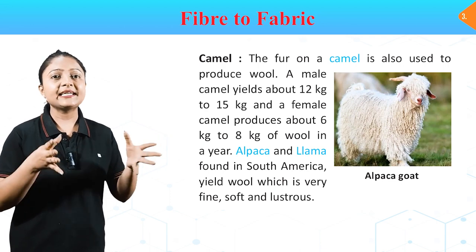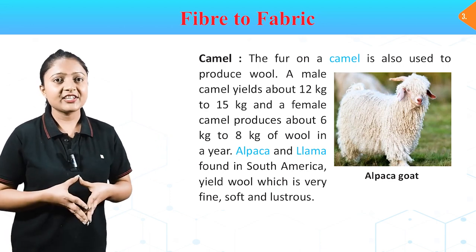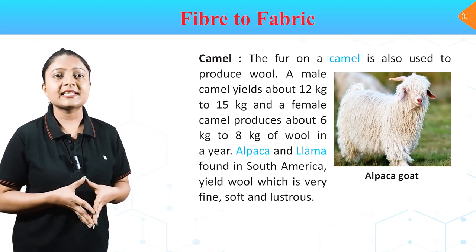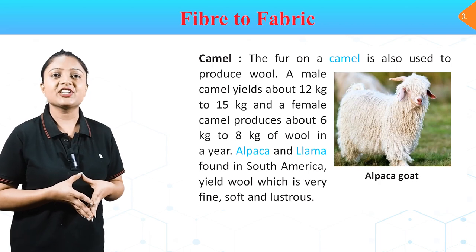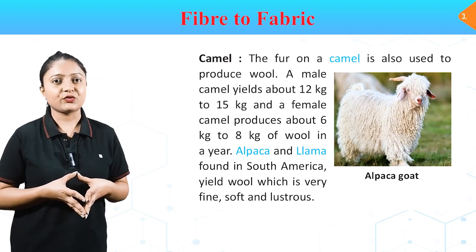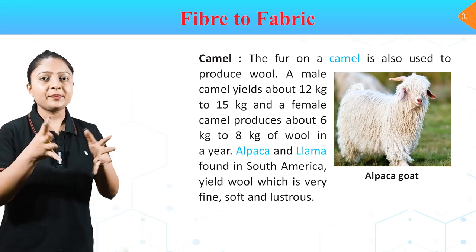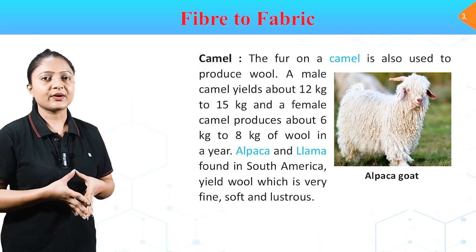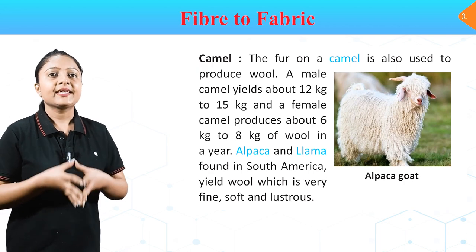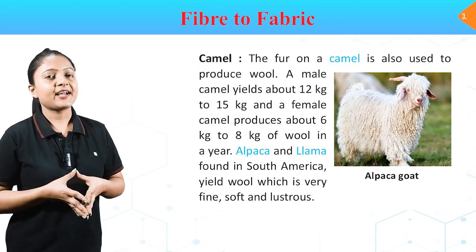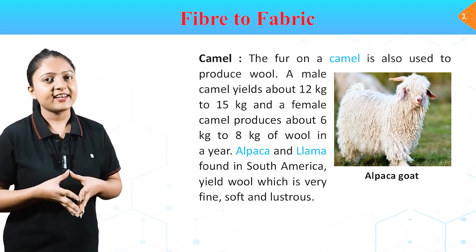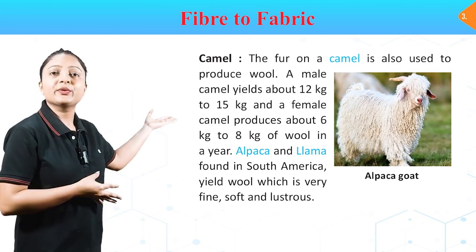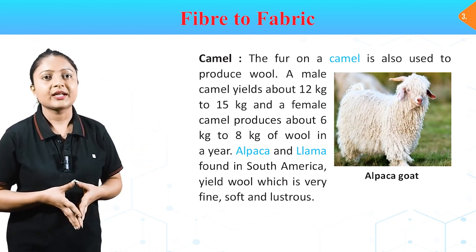Camel: the fur on a camel is also used to produce wool. A male camel yields about 12–15 kg and a female camel produces about 6–8 kg of wool in a year. Alpaca and llama found in South America yield wool which is very fine, soft and lustrous. In this image you can see an alpaca.